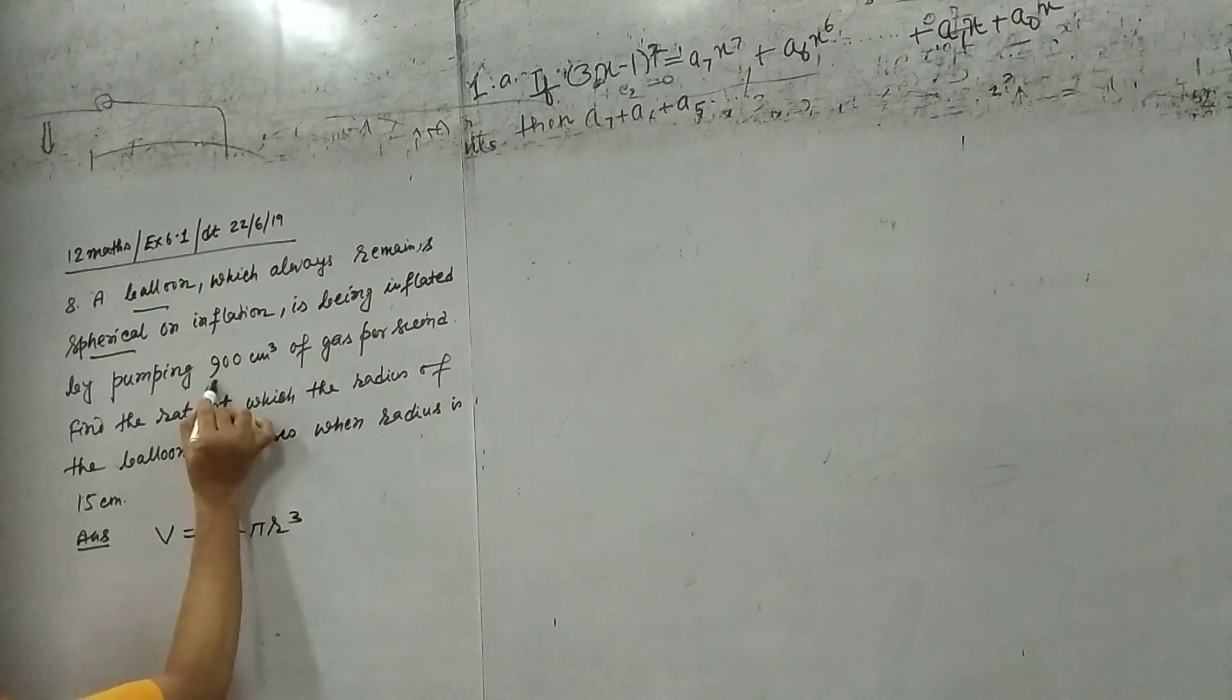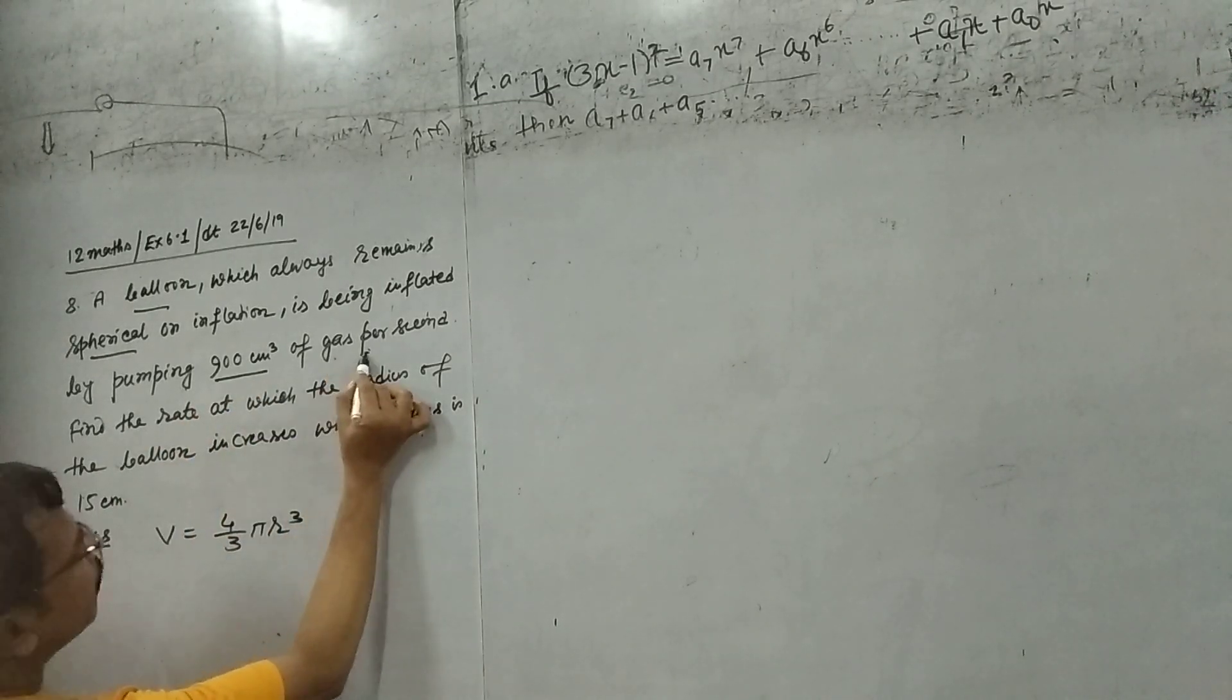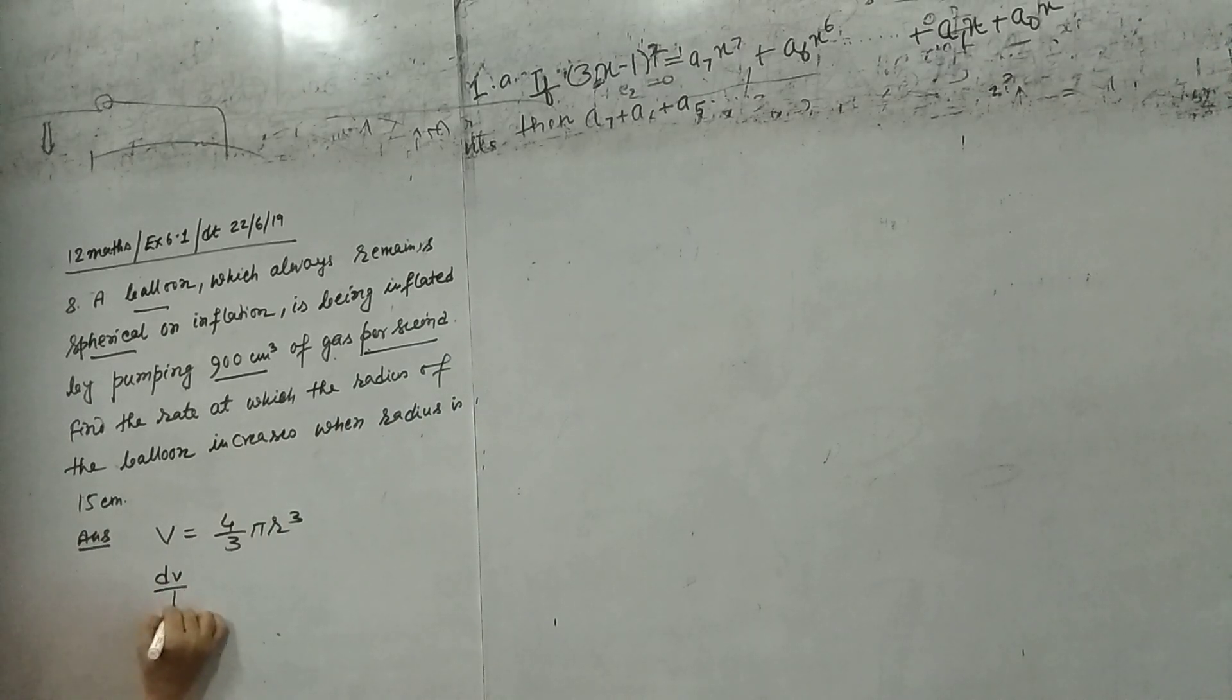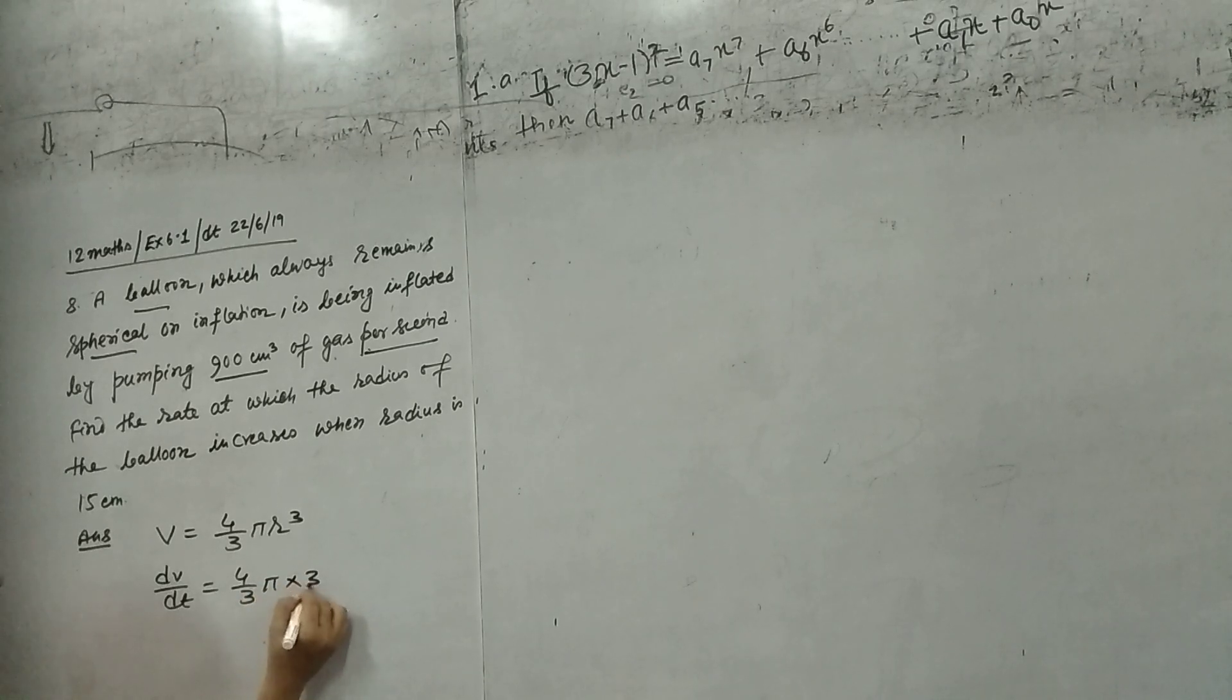And this one 900 centimeter cube per second. That means dV upon dt equals to 4 by 3 pi 3 R square dr upon dt.